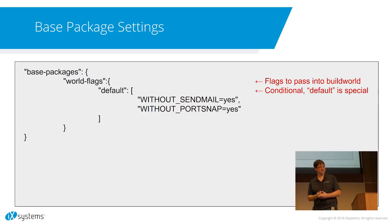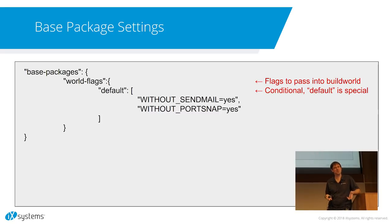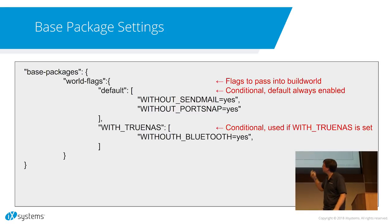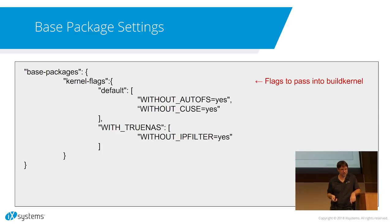We've added conditionals to JSON. This was something we really wanted for FreeNAS because we have FreeNAS and TrueNAS. TrueNAS is a superset of FreeNAS — it takes FreeNAS and adds some additional things onto it. We thought, wouldn't it be cool to have one manifest with conditionals where, depending on an environment variable, we're either a FreeNAS or TrueNAS box. So if we build with TrueNAS set, we can supply additional arguments. You can layer as many conditionals as you want. Ditto with kernel settings.